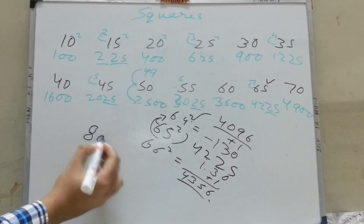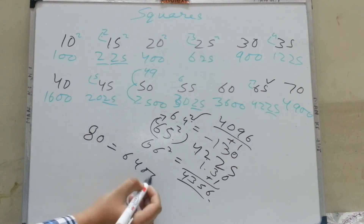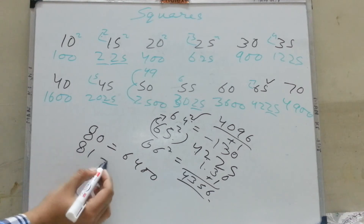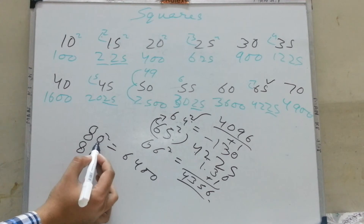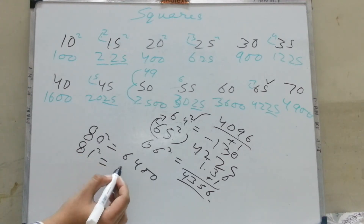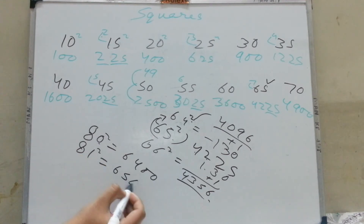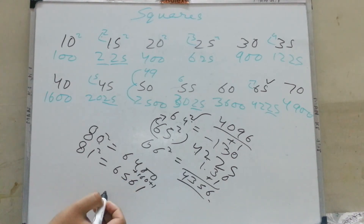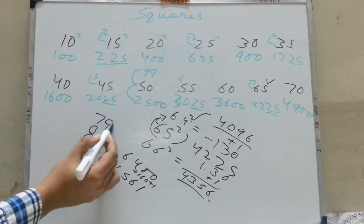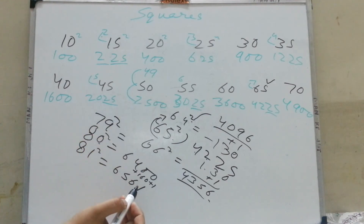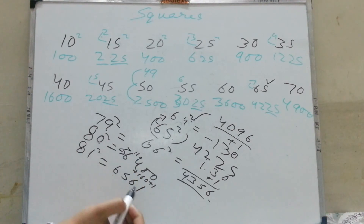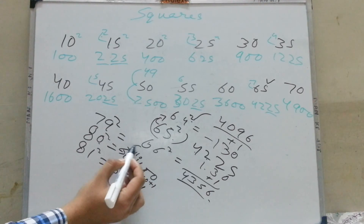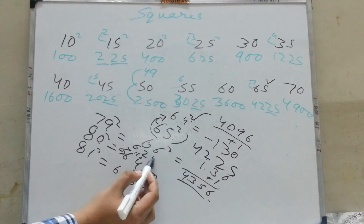The square of 80 is 6400. The square of 81 is: add 80 two times, meaning add 160. So the answer will be 6561, because you add 160 plus 1. To calculate the square of 79, subtract 160 from 6400, so your answer will be 6241.